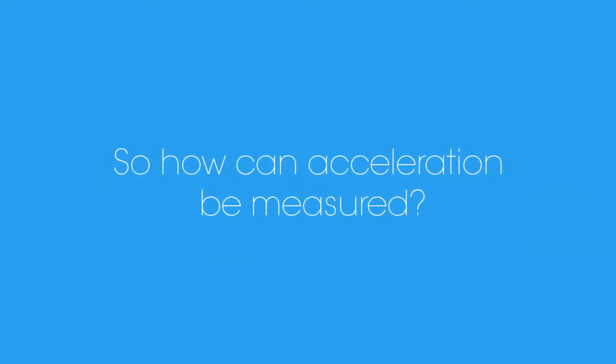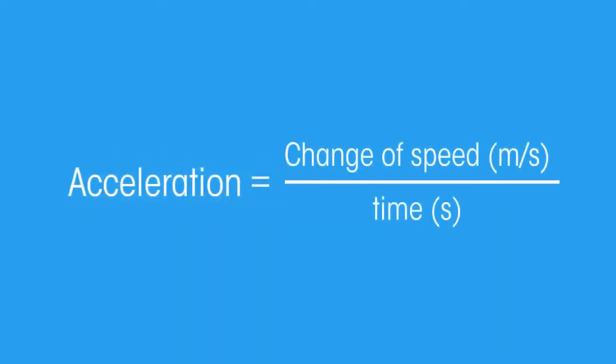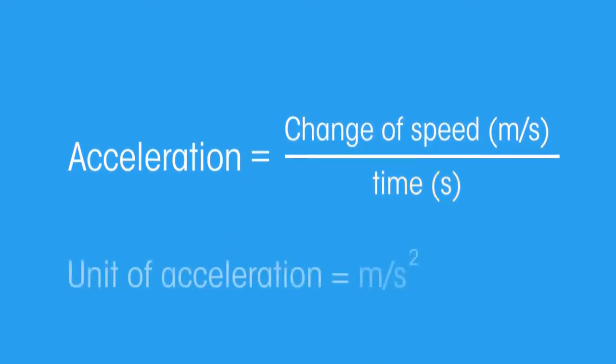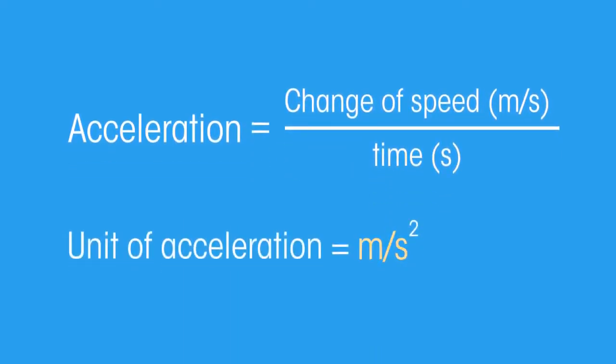So how can acceleration be measured? Since acceleration is the rate at which an object changes its speed, you can say that acceleration is the change of speed over time. The unit of acceleration is meters per second squared.